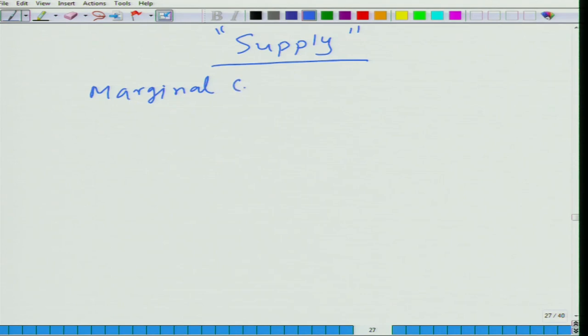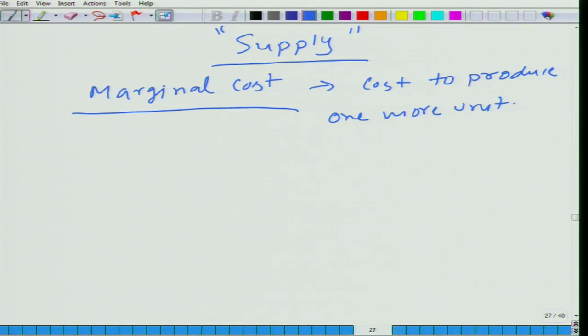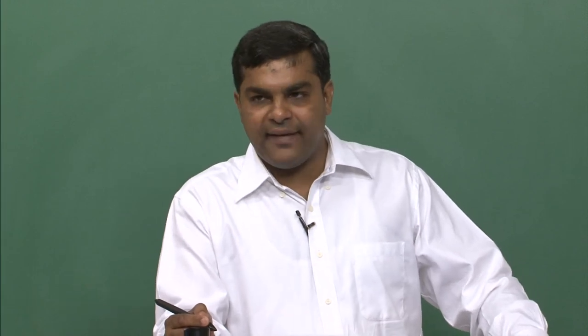Here we will introduce a concept called marginal cost. Marginal cost is the cost to produce one more unit. Think about it: if your cost to produce one unit is 5 rupees and you can sell it in the market for 10 rupees, will you produce it? Of course you will, because by producing you can gain 5 rupees on this unit.